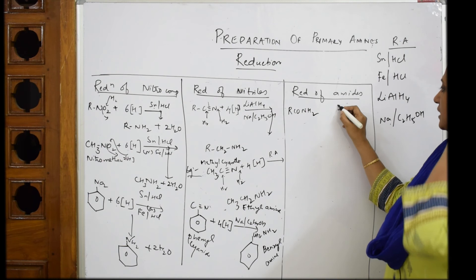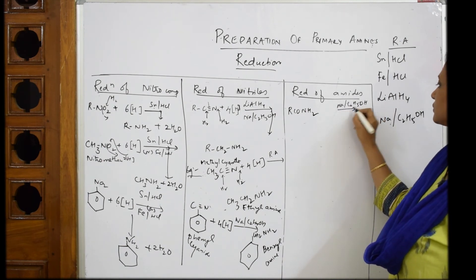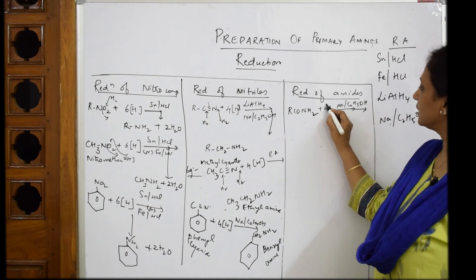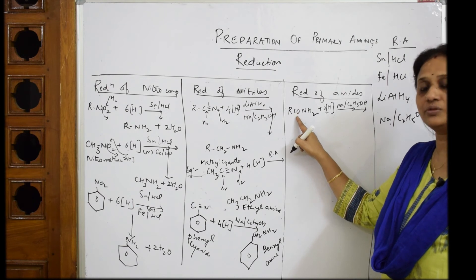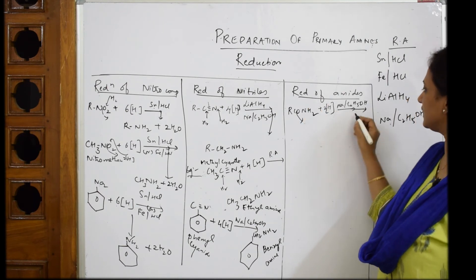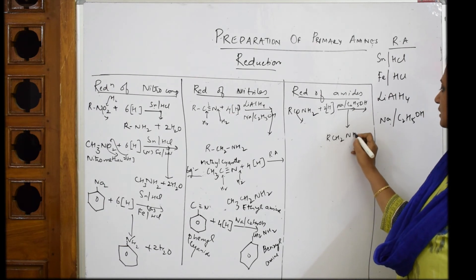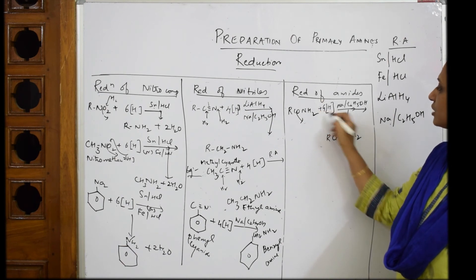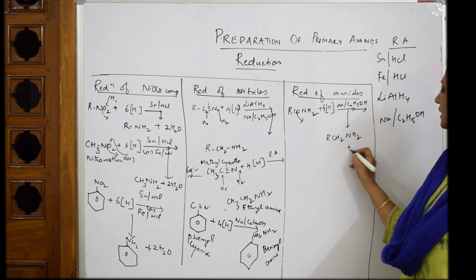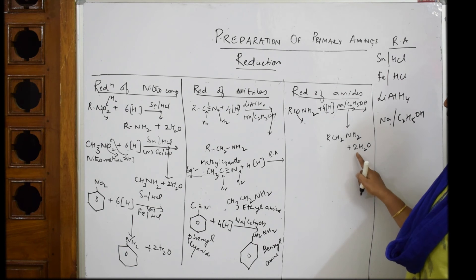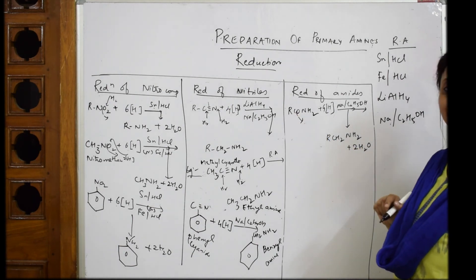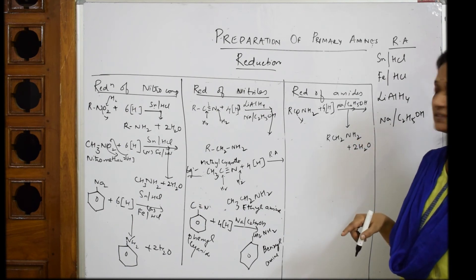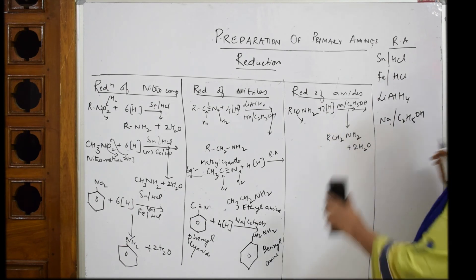For amides, add reducing agents like sodium in the presence of ethanol (C₂H₅OH). You add only two hydrogens to the amide. The oxygen is removed and two hydrogens are added at that site. You get R-CH₂-NH₂. The two hydrogens go in, the oxygen comes out — giving the primary amine product. Remember: the reducing agent acts at the oxygen position only.